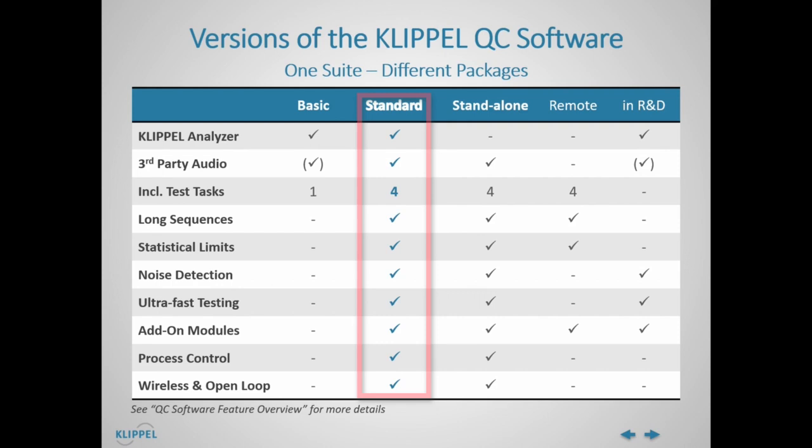QC Standard supports both statistical limit calculation and limits based on a reference data pool. Golden DOTs are identified automatically. The patented ambient noise detection feature is included in this version. Sweep speed profiles provide unmatched test speed at maximum sensitivity. For operating one of the many add-on modules such as air leak detection or motor and suspension check, QC Standard is required.